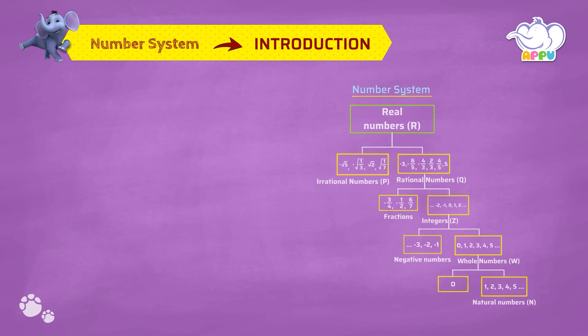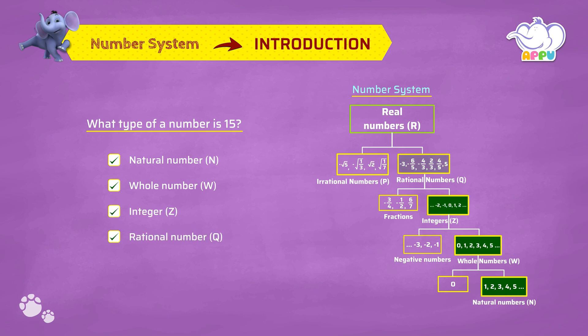Let's look at a few examples. What type of a number is 15? 15 is a natural number, whole number, integer, rational number and a real number too.